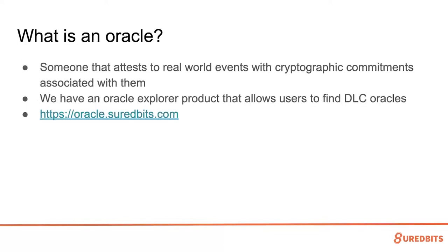What is an Oracle? It's someone who attests to real-world events with cryptographic commitments associated to them. Finding an Oracle for your specific bet is a problem. We have a website for this called the Oracle Explorer, at oracle.suredbits.com. You'll see a list of different oracles for various DLCs that people are doing. If you are an Oracle, you can publish it to the Oracle Explorer so other people can find it. Oracle discovery is not something taken care of natively in the DLC protocol, so you need to go to a third-party site or just have a friend who is a consistent Oracle.